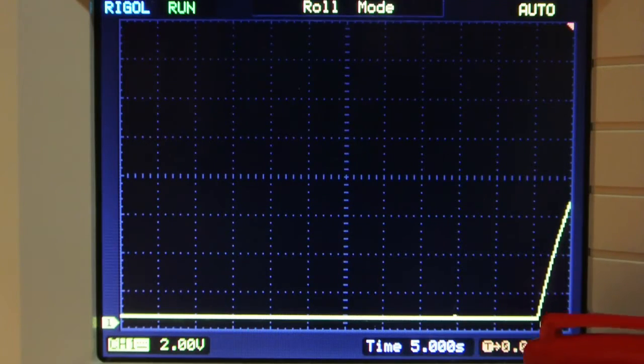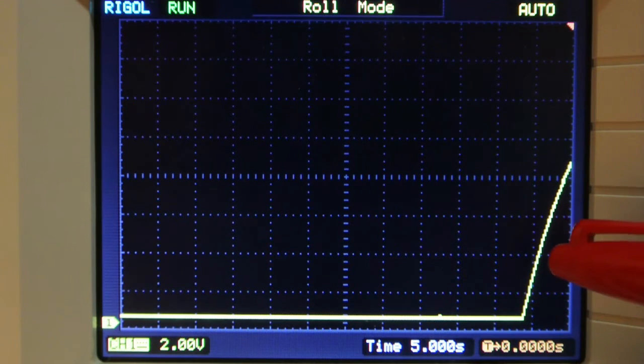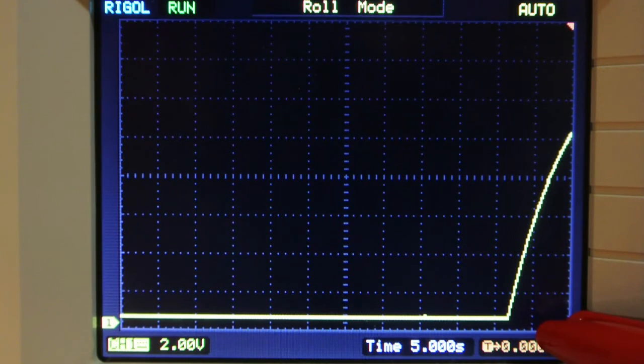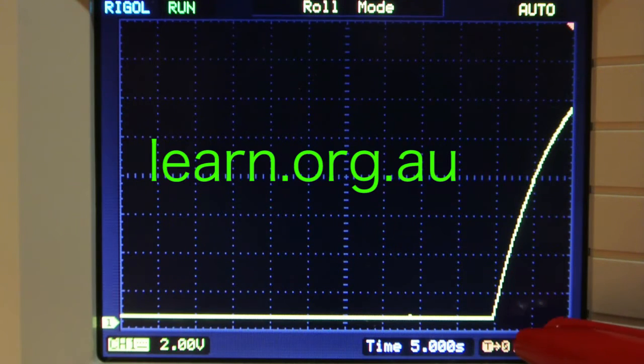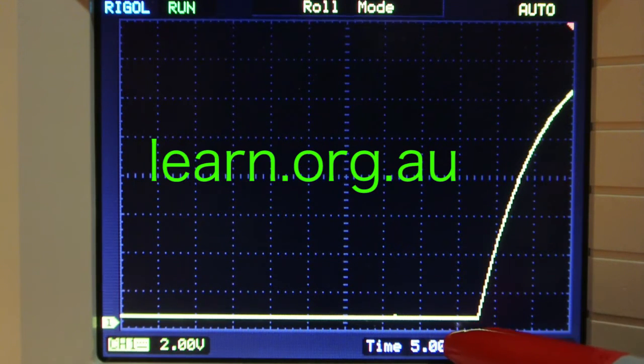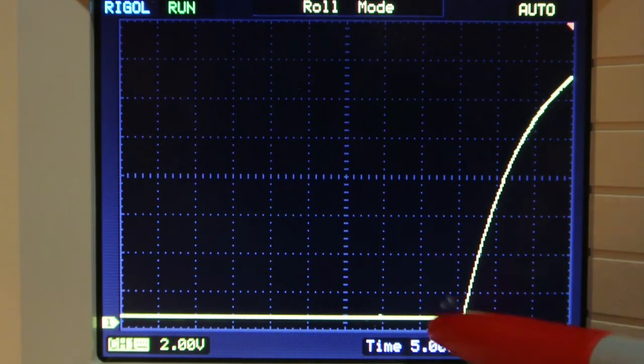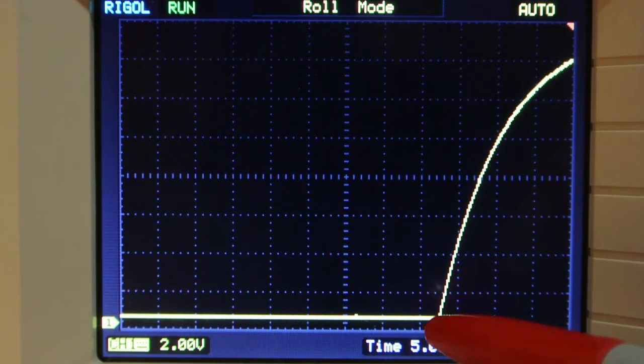You can see now the voltage starting to rise on the oscilloscope. And these divisions are in 5 seconds. That is 10 seconds, 15 seconds coming up. Even at 15 seconds we're almost up to the 16 volts.